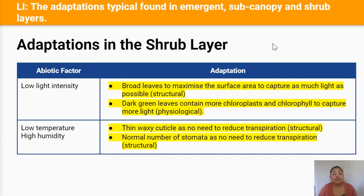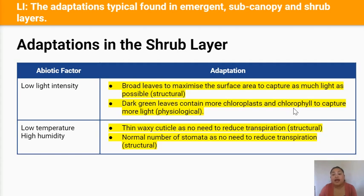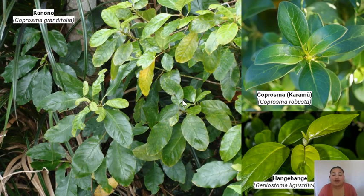In the shrub layer, to withstand low light intensity, plants have broad leaves to maximize surface area and capture as much light as possible, and dark green leaves which contain more chloroplasts and chlorophyll. To withstand low temperatures and high humidity, they have thin waxy cuticles because there's no need to reduce transpiration in such a humid environment, and a normal number of stomata for the same reason. Some examples of shrub plants are the Kanono, Coprosma and Hangehange.